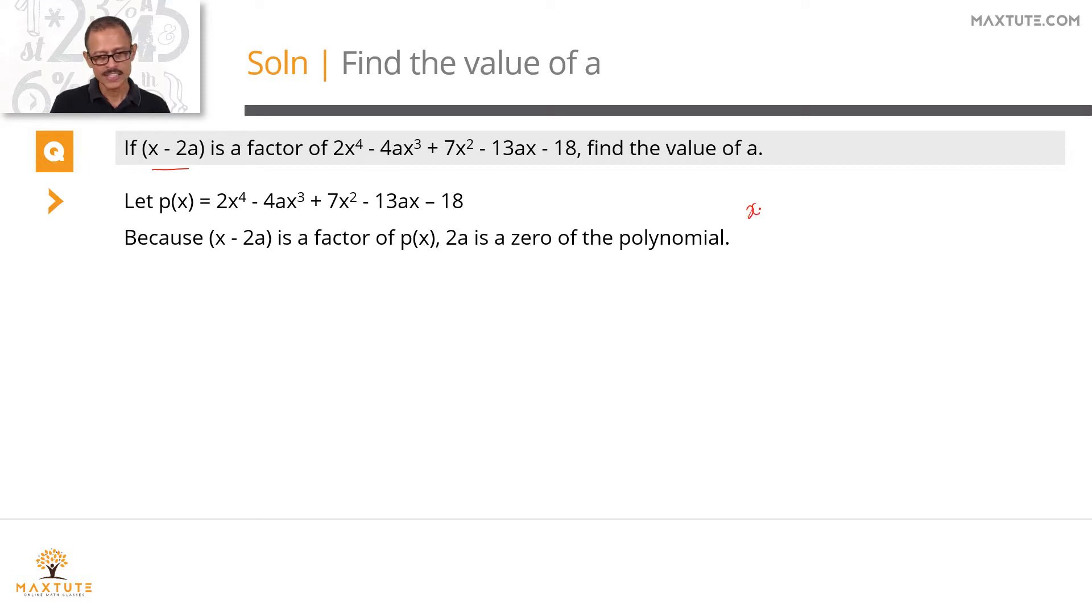For example, if someone told us that x-5 is a factor of this polynomial, then 5 is a zero of this polynomial. That's what this factor theorem is all about. Here, because x-2a is a factor of p(x), 2a is going to be a zero of this polynomial. This is factor theorem.